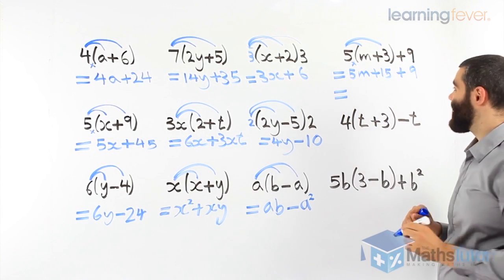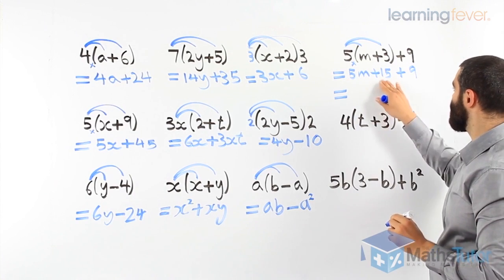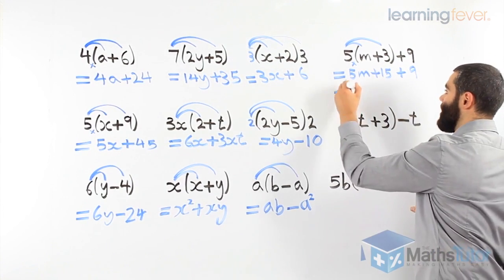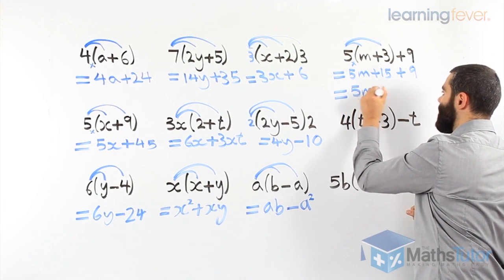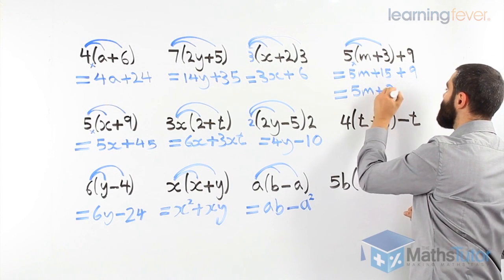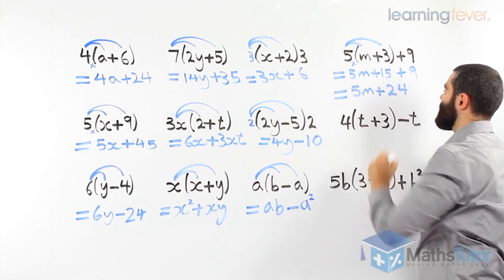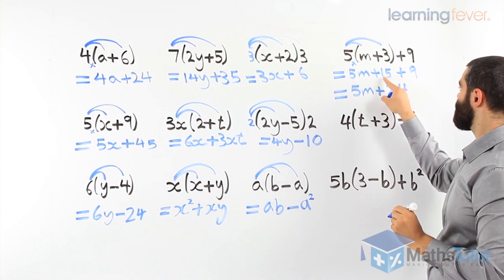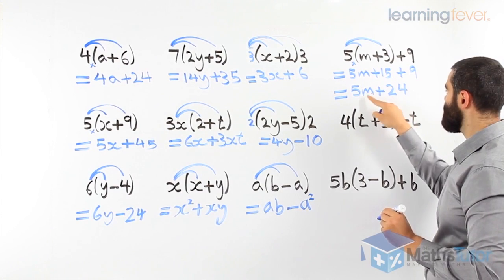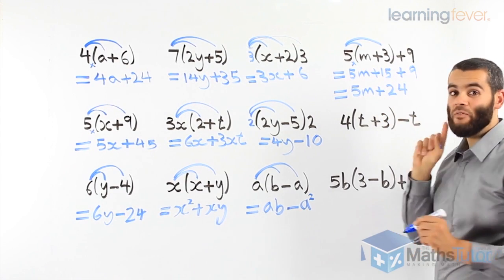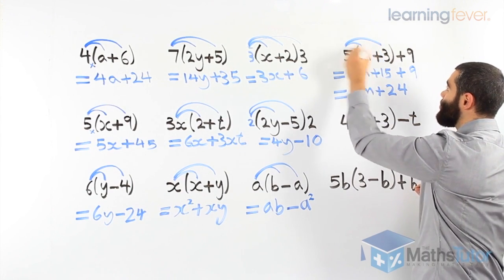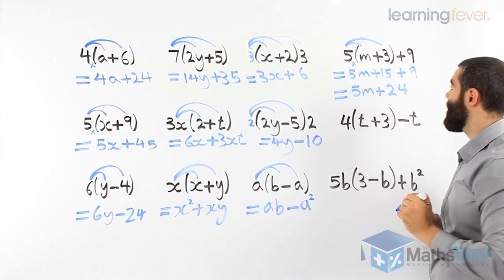And we notice, we can actually simplify even further, because we have like terms. The 15 and the 9 are like terms. So our answer would be 5m, plus 15, plus 9, 24. So 5m, plus 15, plus 9. 15 and 9 become 24. 5m, plus 24. Very, very important. When you're multiplying and you're expanding, you're only expanding what's in the brackets. Be careful not to join the 9 as well.